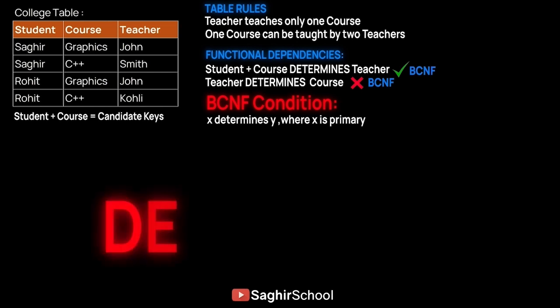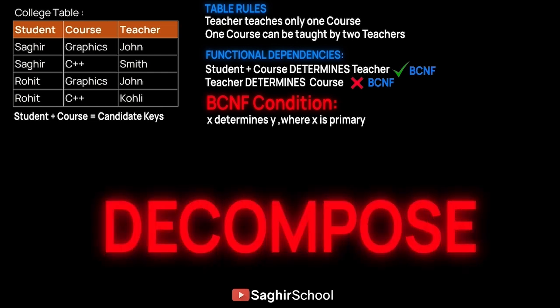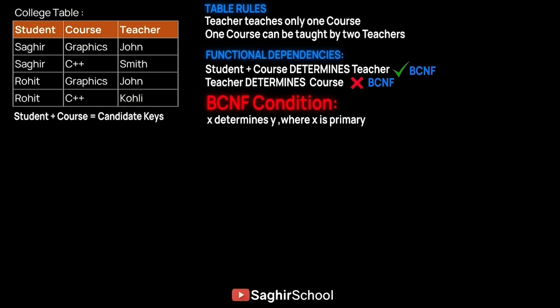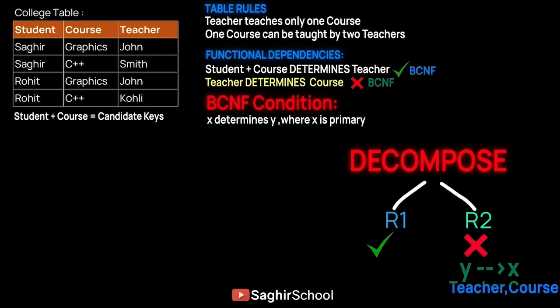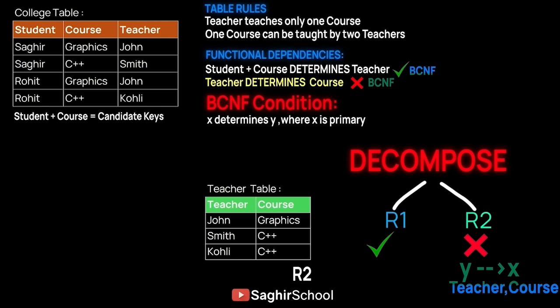The condition for BCNF is X determines Y where X must be primary — and our table violates this since Teacher determines Course. To fix this, we decompose the table. In BCNF decomposition, we split into R1 and R2: R2 contains the problematic functional dependency attributes — Teacher and Course. R1 contains the non-prime attribute paired with the remaining prime attribute — Student and Teacher. This achieves BCNF.